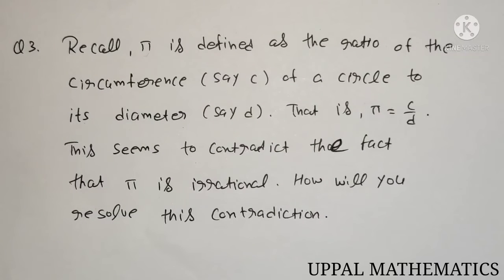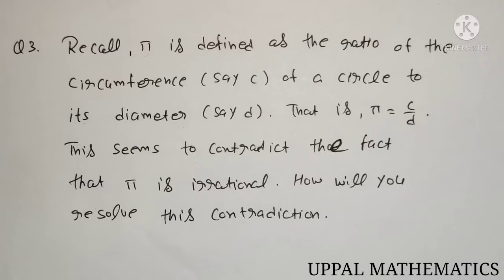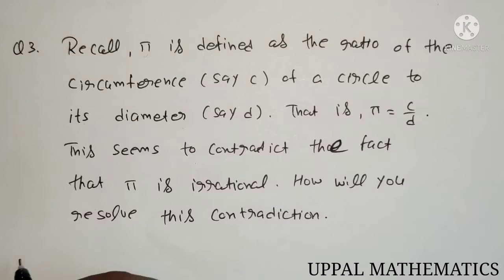Hello students, Exercise 1.5 Question Number 3. Pi is defined as the ratio of the circumference of a circle to its diameter. That is, pi equals C divided by D, where C is circumference and D is diameter. This seems to contradict the fact that pi is irrational. So we have to resolve this contradiction.